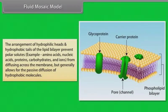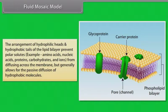The arrangement of hydrophilic heads and hydrophobic tails of the lipid bilayer prevents polar solutes — such as amino acids, nucleic acids, proteins, carbohydrates, and ions — from diffusing across the membrane, but generally allows for the passive diffusion of hydrophobic molecules.